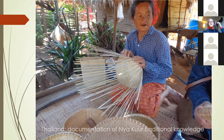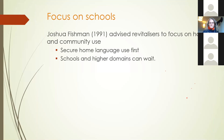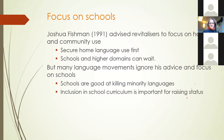A little theorization based on these examples: very often language revitalization will focus on schools, despite the advice of Joshua Fishman — a key figure in this field — to focus on home and community use. He said, secure the language in the home, then you can focus on higher-status domains such as schools. But many language movements ignore his advice. Why? First, they see that schools are very good at killing minority languages, so they think maybe schools could be good at saving them. They also see that inclusion in the school curriculum is very important for raising the status of a language.